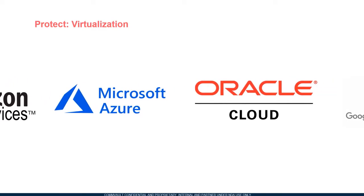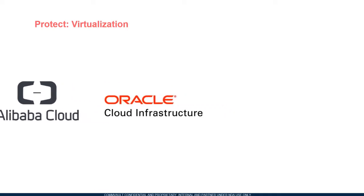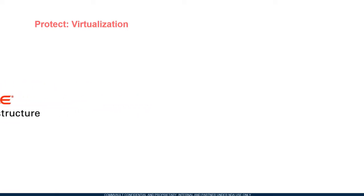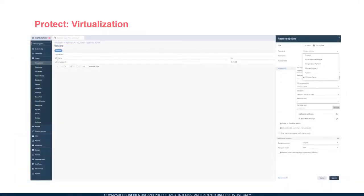Commvault supports agent-less data protection for virtual machines hosted inside public clouds including Amazon, Microsoft Azure, Google, Oracle, and Alibaba. Users can restore full virtual machines, virtual machine files, and guest files through the Commvault Command Center — and it's as simple as restoring a regular file. Additionally, by leveraging Commvault's broad hypervisor support, users can perform VM conversion for DR and migration purposes by performing a full VM restore and converting the source virtual machine to be used with a different hypervisor or public cloud instance.